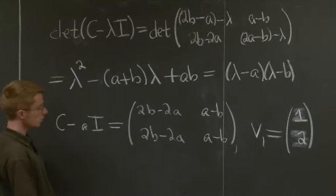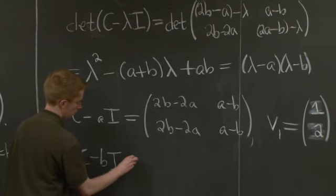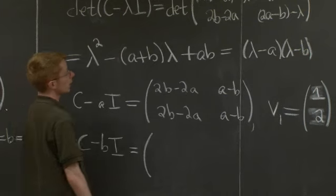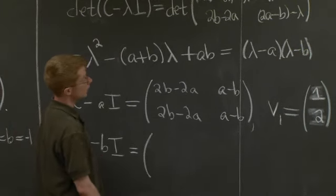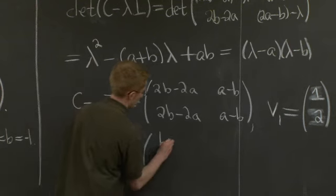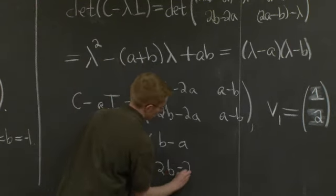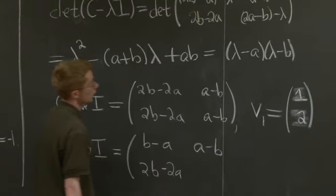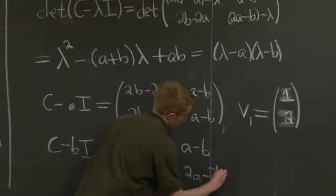Now, well, I guess we have space to do the second one, too. Why not? So let's write out the second one, also. Here we're subtracting B instead of A. We get B minus A. We get 2B minus 2A. We get A minus B. And what do we have here? We have 2A minus 2B.